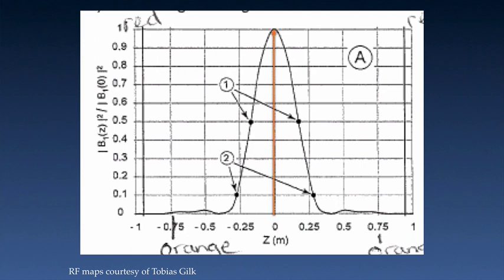The vertical axis of the graph is the percent of RF power, so anything located at isocenter would be receiving 100% of the RF power. You can also tell by the map that this coil is approximately 0.6 meters or 60 centimeters in length. If an item was located 0.25 meters or 25 centimeters from isocenter, it would be receiving approximately 20% of the maximum RF power. If it were located here, it would be receiving approximately 10% of the RF power.